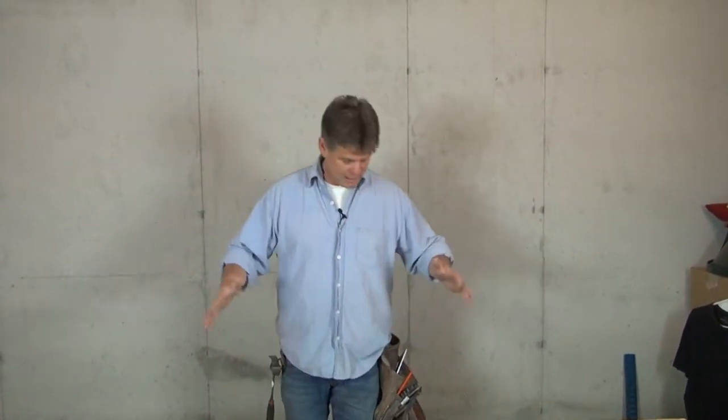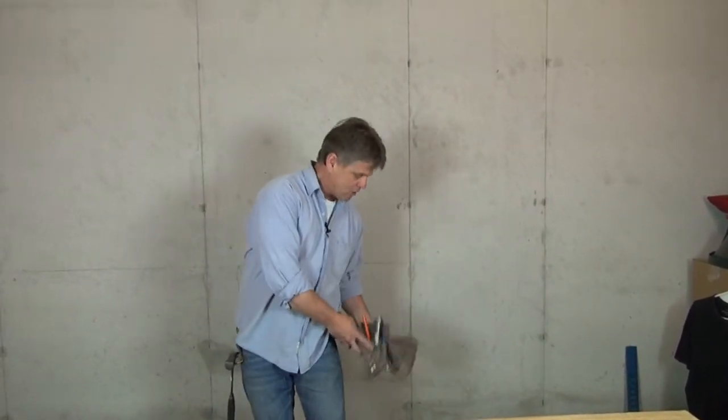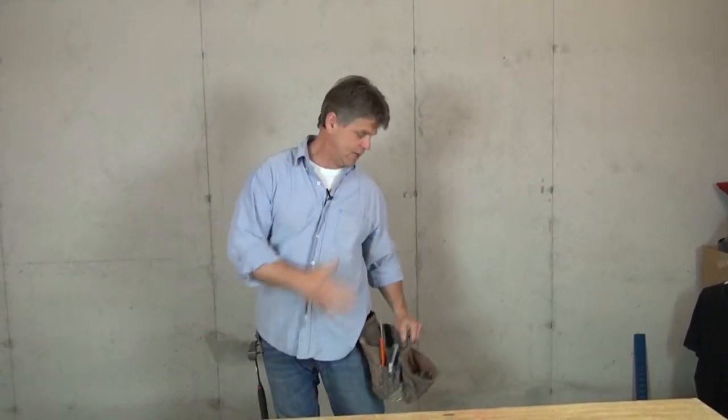So get yourself a tool belt. It doesn't matter if it's a model like this. It could have a big pouch like this on one side and another identical one on this side. Just for me personally, I only want to have my hammer on the right side. That's the way that it works best for me. I can keep everything that I need in a pouch on the left side, but keep this in mind: